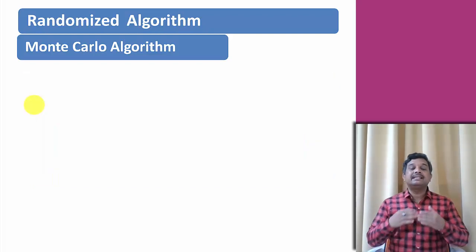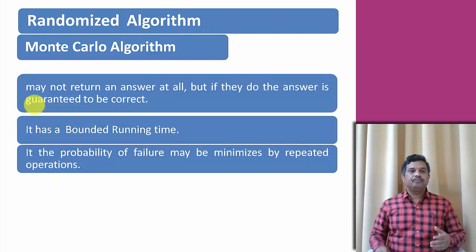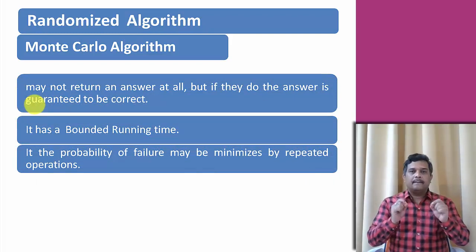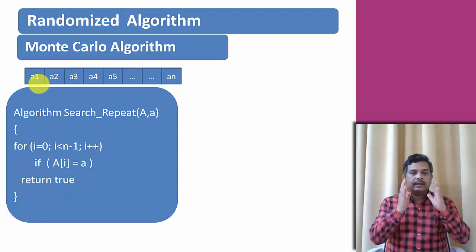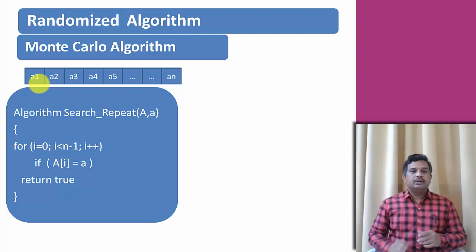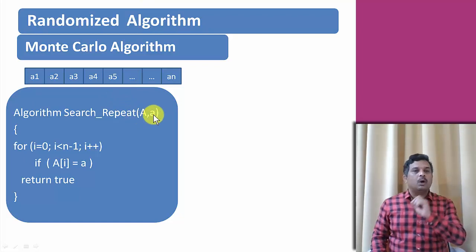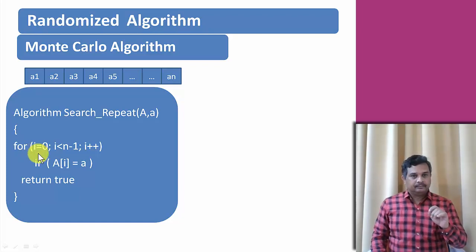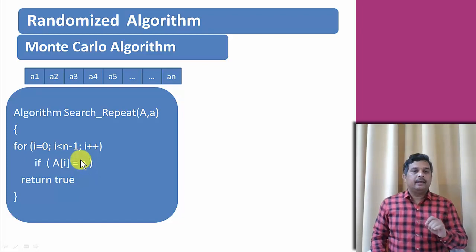The Monte Carlo algorithm may not return the answer at all. For example, if we want to search whether data exists in an array — given array A and searching for element a — we check each element with a, and if it is equal we return it. This is the standard linear search approach.